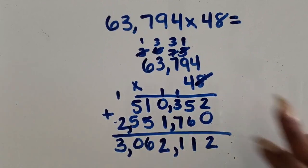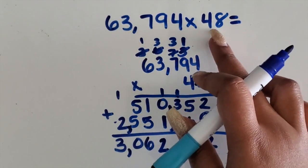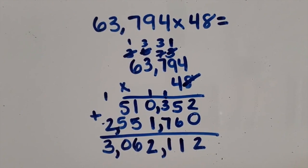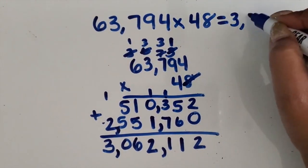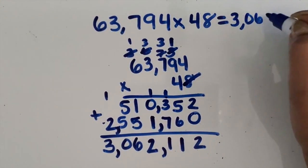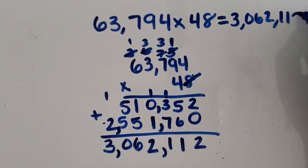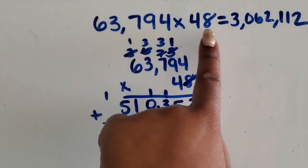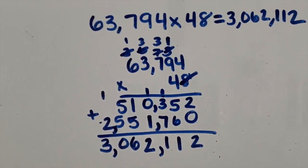So the total product of 63,794 times 48 is 3,062,112. We multiplied a five-digit number and a two-digit number using the standard algorithm.